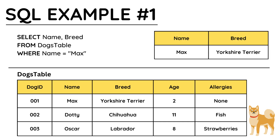In my first example, I'm selecting just the name and breed fields to be shown. You can see that the field names must be separated by a comma — not the word AND, or a plus, or an ampersand, or anything else. It must be a comma between the field names. The FROM command states that I want to use the table called DOGS TABLE. Finally, the WHERE command is my criteria and I want to display information where the name is equal to MAX. Because the name field uses a string data type, I must put MAX in speech marks. On the right, you can see what would happen if I executed this SQL code — it has selected just the name and breed fields where the name is equal to MAX.